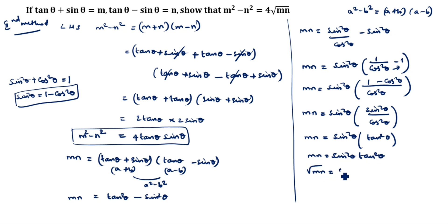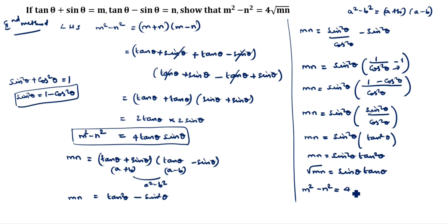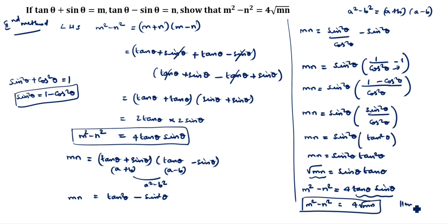Therefore √(mn) = sin θ · tan θ. We had m² - n² = 4 tan θ sin θ, and tan θ · sin θ = √(mn). So m² - n² = 4√(mn). Hence proved. This is the second method. You can follow whichever method is easiest for you. Thanks for watching this video.